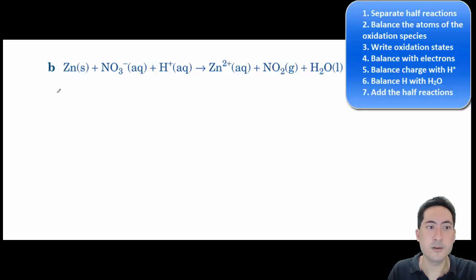For the next one, we'll go through all the steps this time. We separate the half equations out. Now that's going from 0 to plus 2, so that's increased. I know that one's the oxidation reaction.